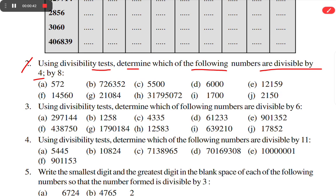First we try with 4. We know that a number is divisible by 4 if the number formed by its digits in the tens and units place is divisible by 4. So for 572, if 72 is divisible by 4, then the whole number is divisible by 4. We know 72 is divisible by 4, so 572 is also divisible by 4.